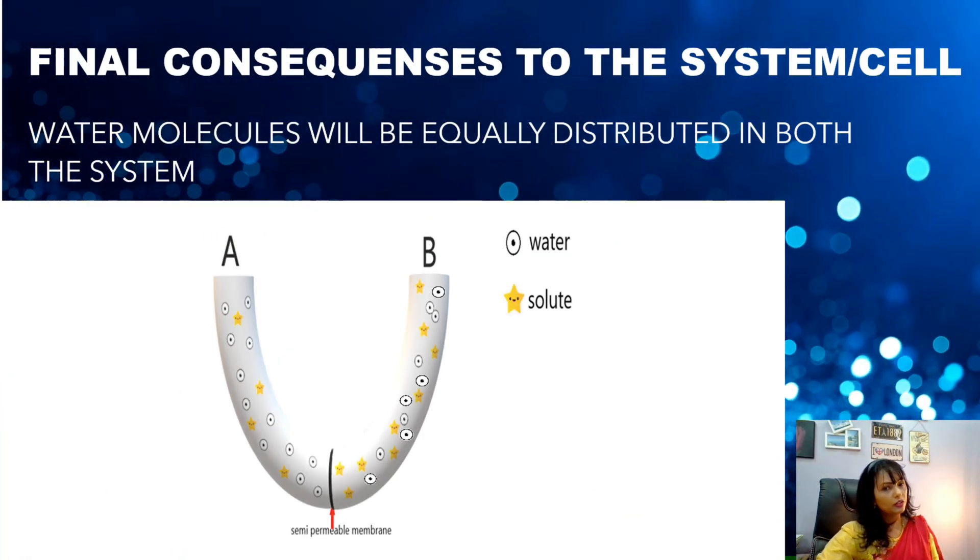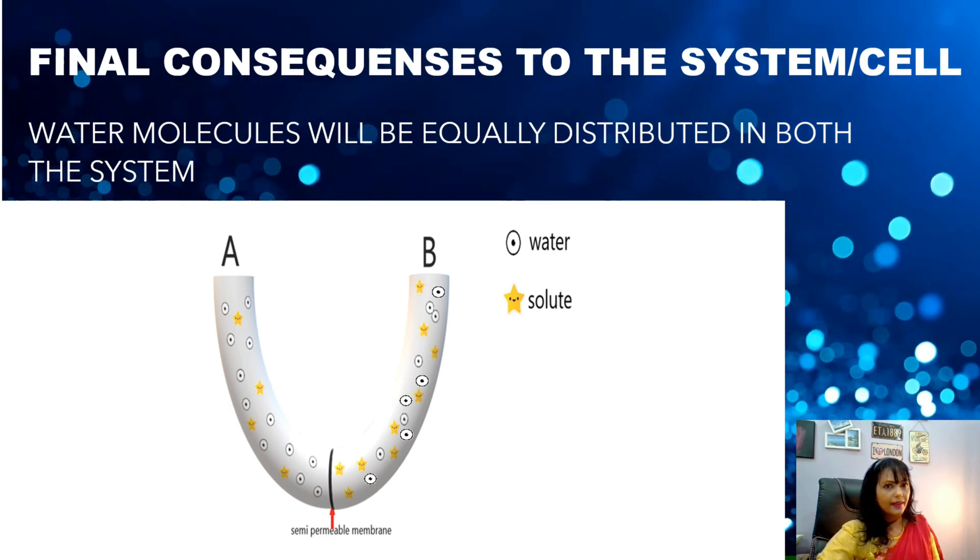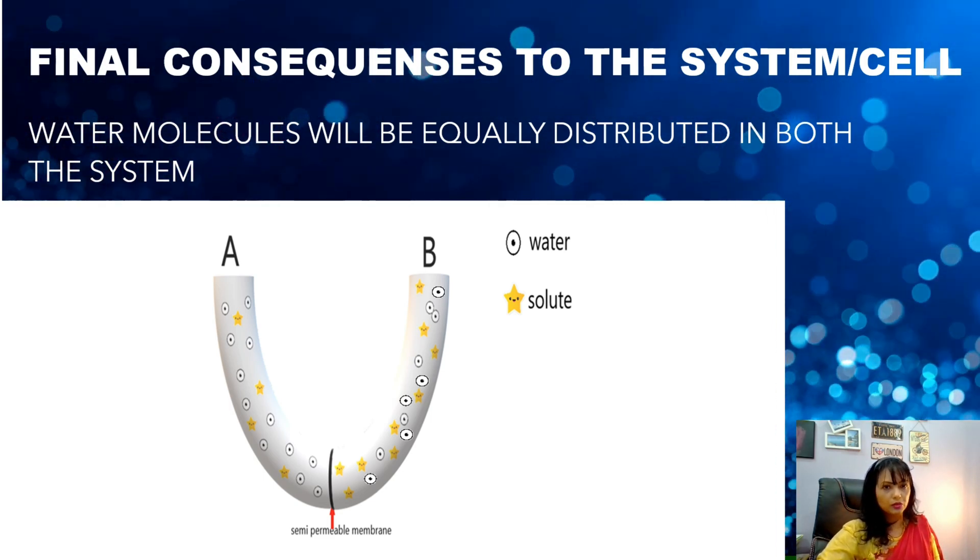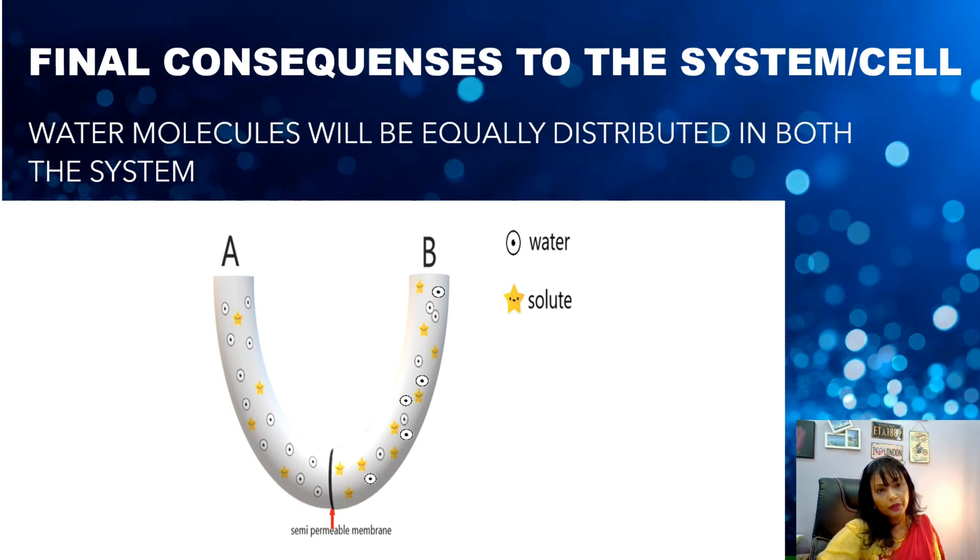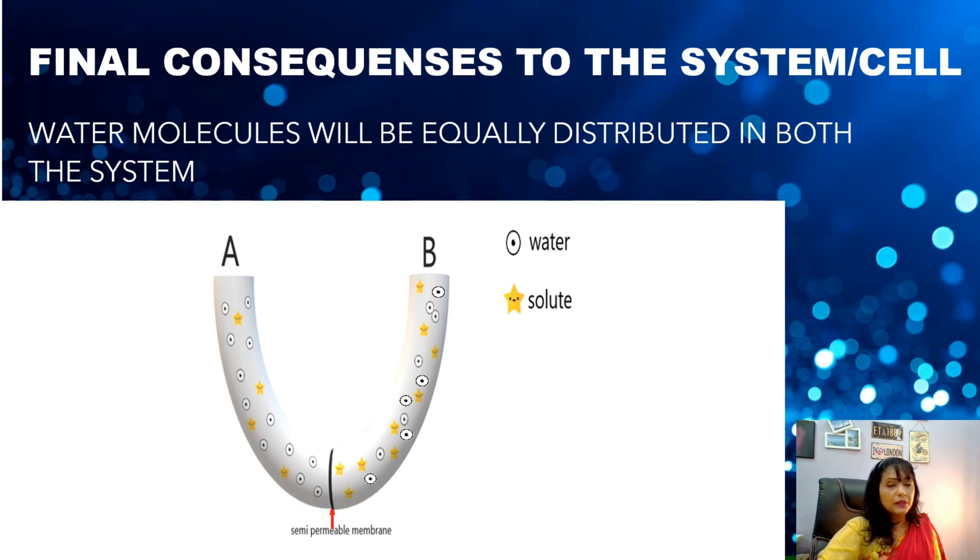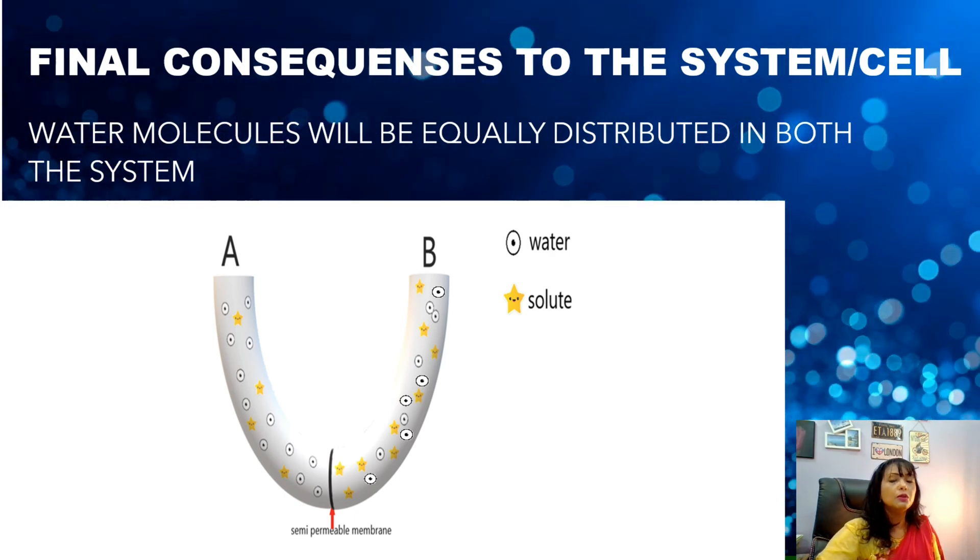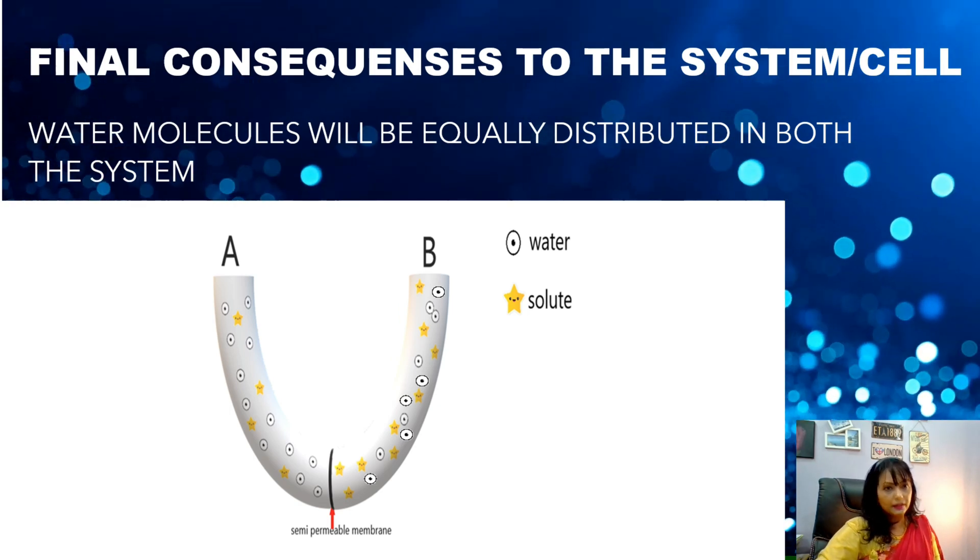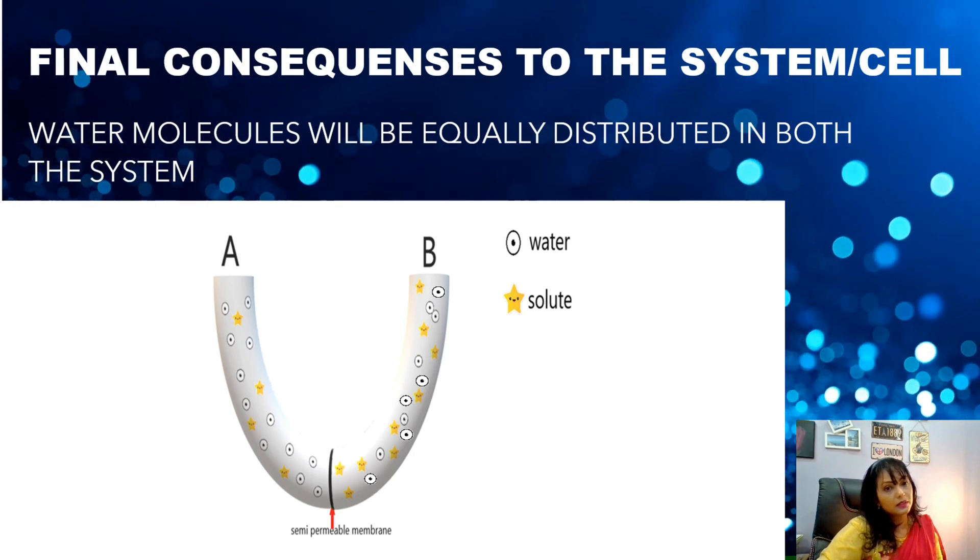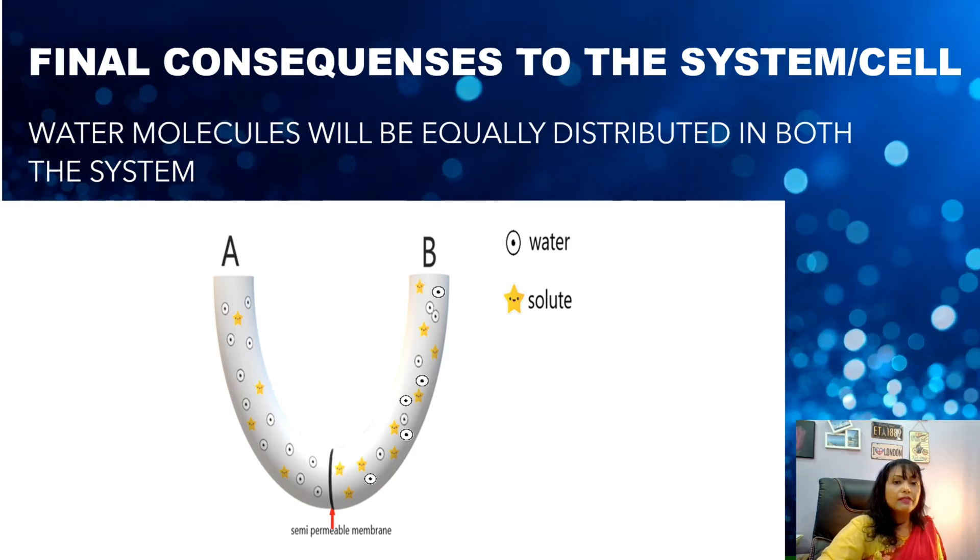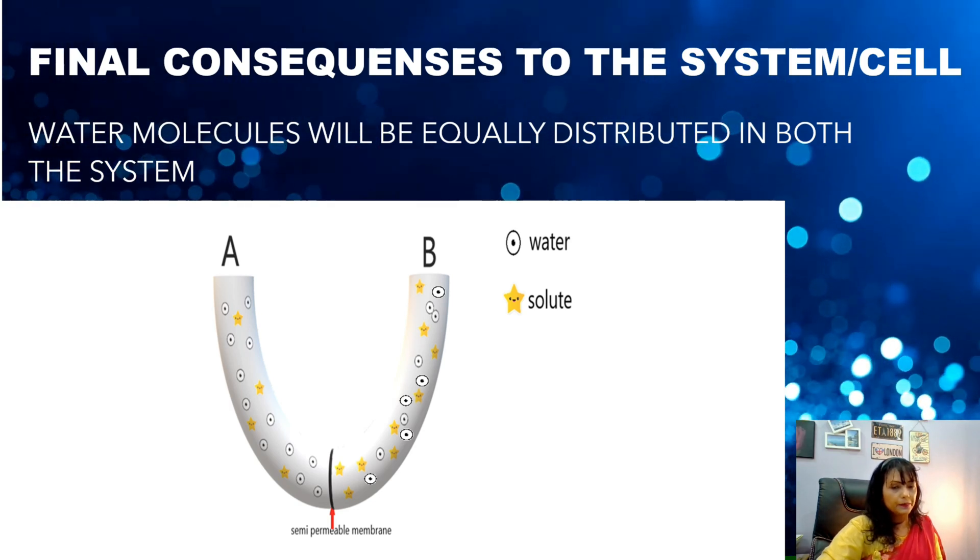Well, the water molecules have diffused from A to B. Obviously, because A is hypotonic to B. So, of course, water molecules will always diffuse from A to B because they are hypotonic. So, what will happen? What will be the final consequences to the system? That is what you need to define in your answers. So the water molecules will be equally distributed in both the systems, meaning A will have equal amount of water molecules compared to B.